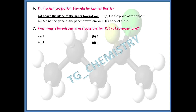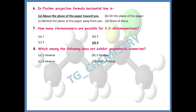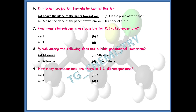Which among the following does not exhibit geometrical isomerism? The right answer is option A — 1-hexyne does not show geometrical isomerism. Related to question seven, how many stereocenters are there in 2,3-dibromopentane? With stereocenters, the maximum number of stereoisomers is 2^n. Since four stereoisomers are possible for 2,3-dibromopentane, there must be two stereocenters.